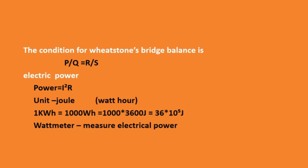Next is electric power. Electric power is I²R. The unit of electric power is joule, but in practical use we use watt·hour. One kilowatt hour equals 1000 watts multiplied by 3600 seconds, that is 36 × 10⁵ joules. A wattmeter is the instrument used to measure electrical power.